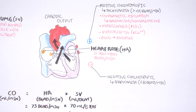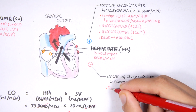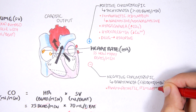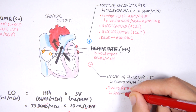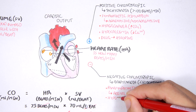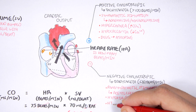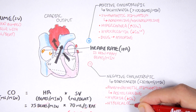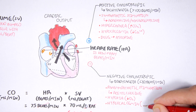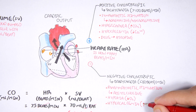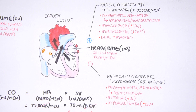The negative chronotropic factors: the main one is parasympathetic stimulation, whose main neurotransmitter is acetylcholine. Hypoxia also decreases heart rate, as does hypercalcemia. When dealing with hypercalcemia and hypocalcemia, these usually don't have much of an effect on heart rate — rather, they have a more profound effect on the muscles of the heart, which we will discuss soon.